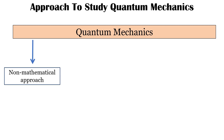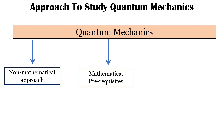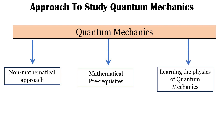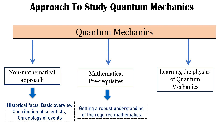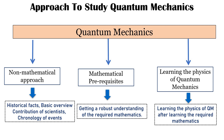By method of study I mean how shall we study quantum physics. We can divide it as a non-mathematical approach — people want to study because of extensive research and a lot of books have been published, some on conscious and spiritual levels. Then there is an approach that asks what mathematical prerequisites we need before going into quantum mechanics, and then we go directly to learning quantum physics. The non-mathematical approach has a lot of historical facts, basic overview, contributions of different scientists, and the chronology of events. The mathematical prerequisites approach gives a robust understanding. These are the threefold approaches to study quantum mechanics.